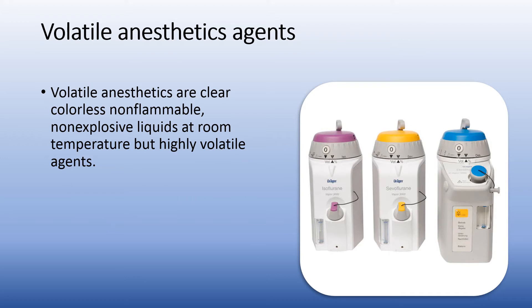The volatile agents, as we have said before, are clear and colorless, non-flammable, non-explosive liquids at room temperature, but highly volatile agents. They require what we call vaporizers, as shown in this picture, and each vaporizer has the same color code as the bottle that contains the specific anesthetic agent, as we are going to see later on.